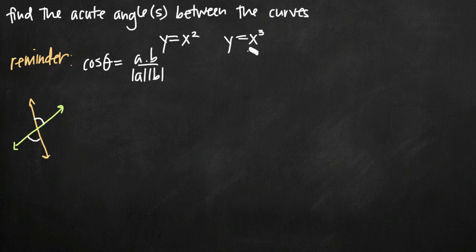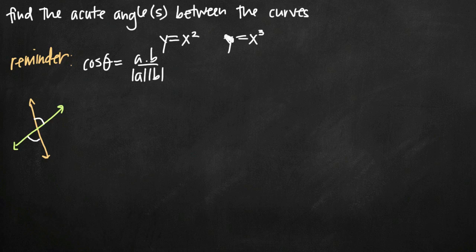When we talk about finding the acute angle between two curves, really all we're saying is that we're looking for the angle between the tangent lines to these curves at their points of intersection. In that way, it really simplifies to an angle between two lines problem instead of an angle between two curves problem. The only difference is that we have to do two steps before we can just look for the angle between two lines.